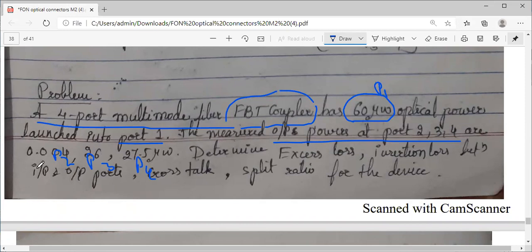P1 is 60 microwatts, and P2, P3, P4 are 0.004, 26, and 27.5 microwatts. All values are in microwatts, differentiated by comma, so don't consider it as 0.04 only.